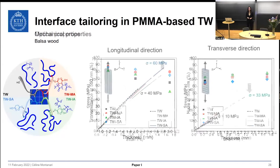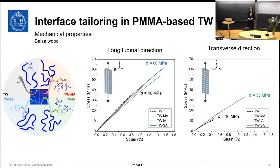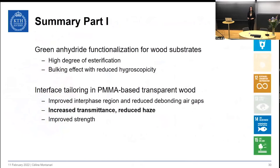We also assessed the effect of interface tailoring on the mechanical performance. In longitudinal loading, functionalization results in improved strength, while in transverse loading, covalent attachment seems to correlate with improved strength, with the strongest effects for itaconic anhydride. To summarize part one, we developed a green chemical functionalization platform using renewable cyclic anhydrides, resulting in high degree of esterification, a bulking effect, and reduced hygroscopicity. Applied for interface tailoring in PMMA-based transparent wood, this resulted in increased transmittance, reduced haze, and improved strength.